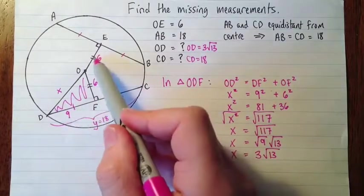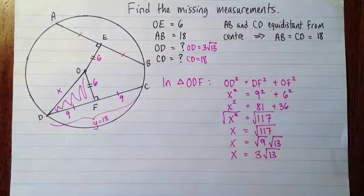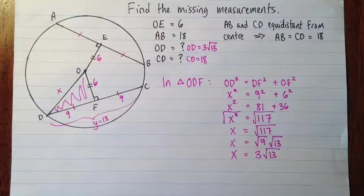So then we had our 9 here. We had our 6 because it was just the same as OE. And then we did Pythagorean theorem on that triangle. Okay, good luck with it.